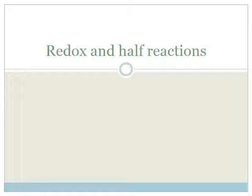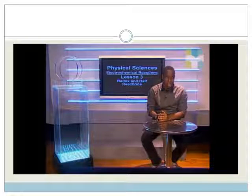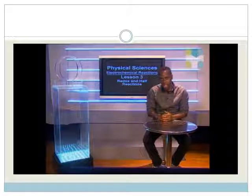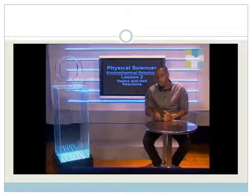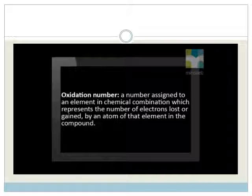In this lesson, we will learn more about these reactions. To understand the redox reaction, it is important that we review the oxidation numbers that we studied in grade 11. The oxidation number is a number assigned to an element in chemical combination which represents the number of electrons lost or gained by an atom of that element in the compound.